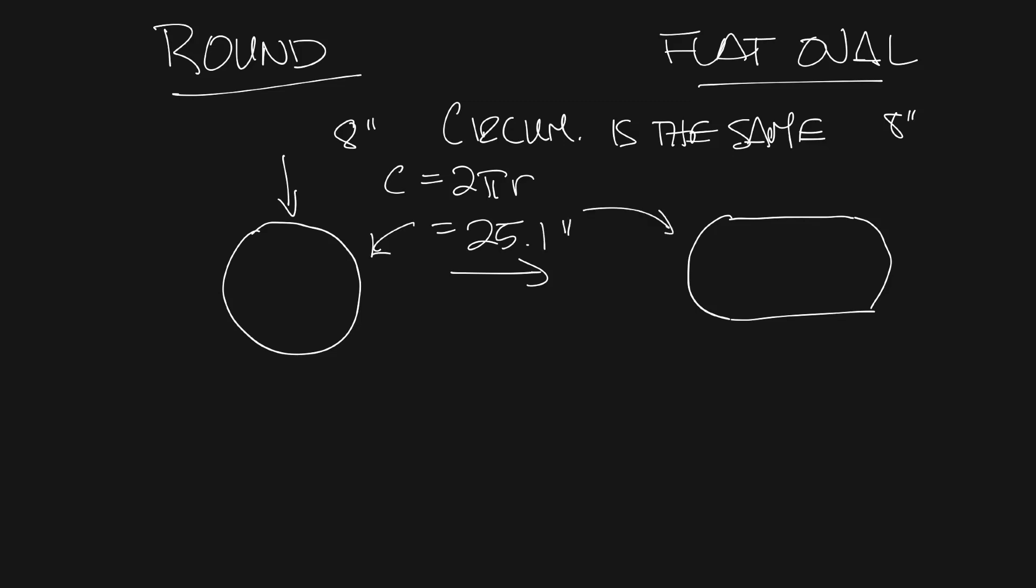But let's look at the area. Area is πr² so that's π times 4² which is 50.3 square inches for the round.